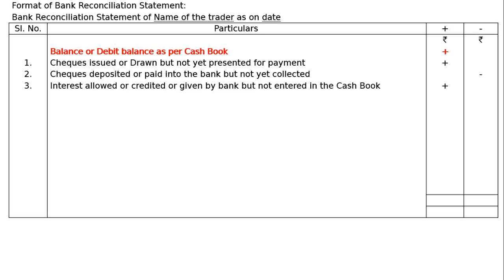Third item: interest allowed, credited, or given by the bank but not entered in the cash book. Interest allowed increases the passbook but not the cash book, because it is not known to the trader. Hence we have to add this to the cash book balance to find out the correct passbook balance.